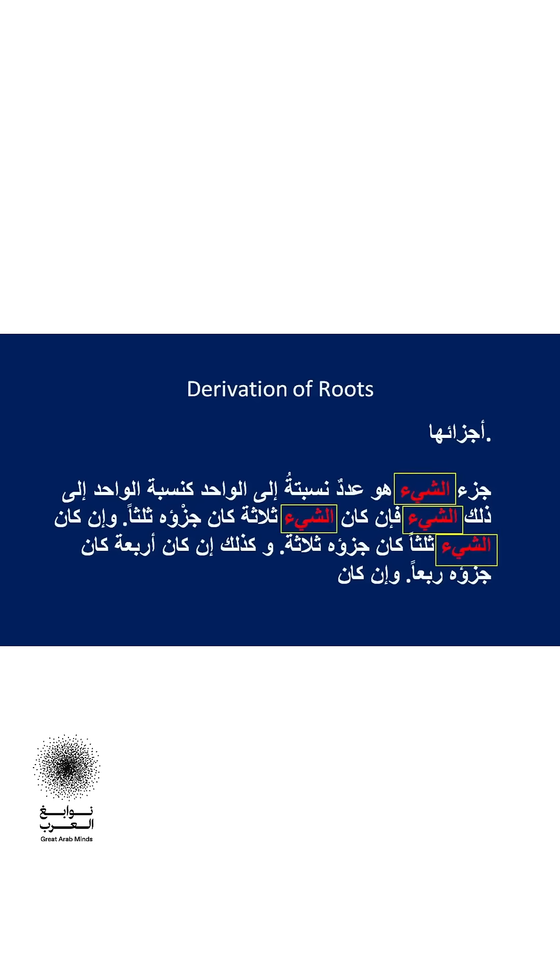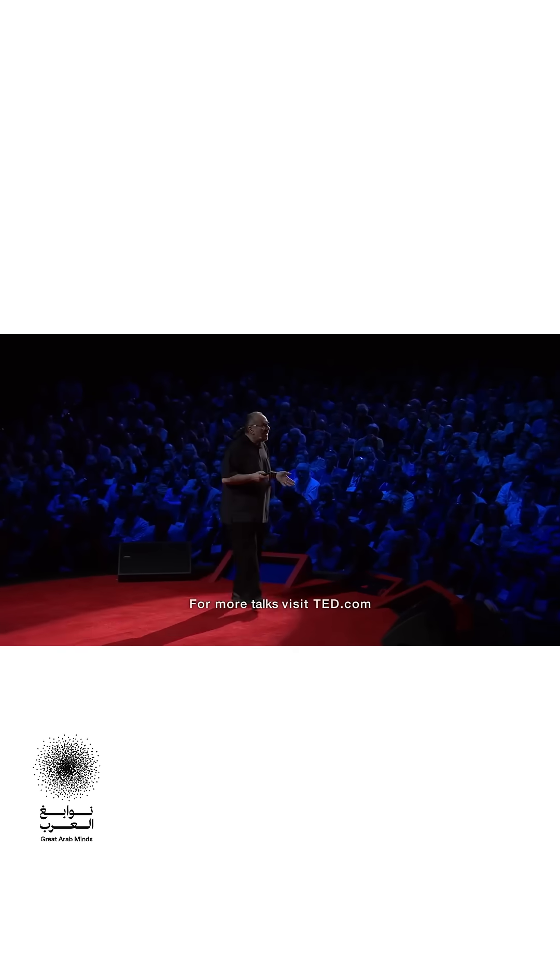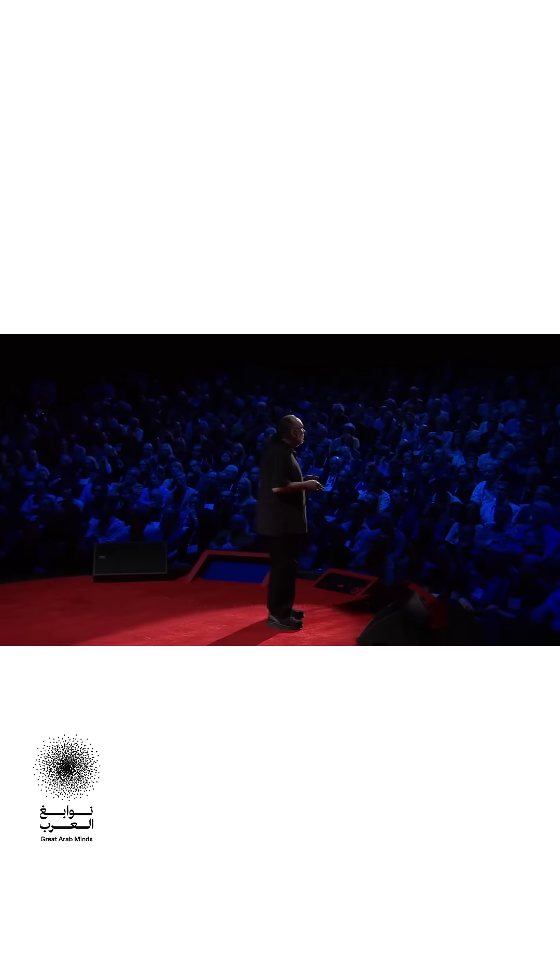The problem for the medieval Spanish scholars who were tasked with translating this material is that the letter sheen and the word sheen can't be rendered into Spanish, because Spanish doesn't have that sh sound. So by convention, they created a rule in which they borrowed the K sound from classical Greek in the form of the letter Chi.